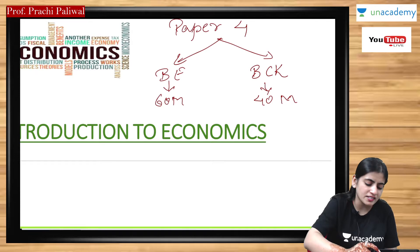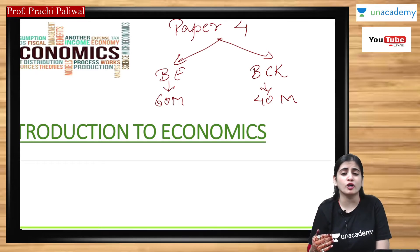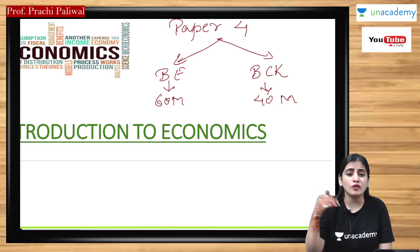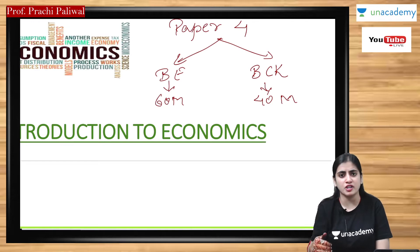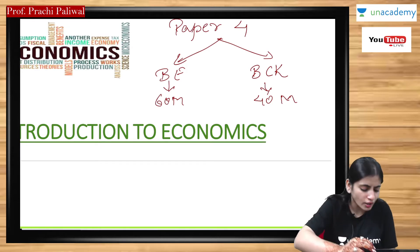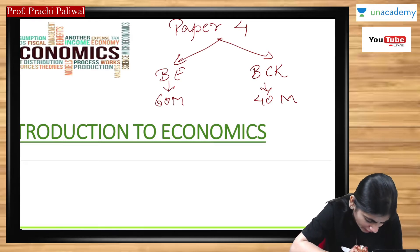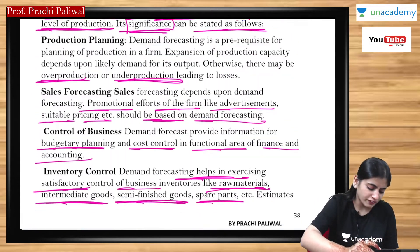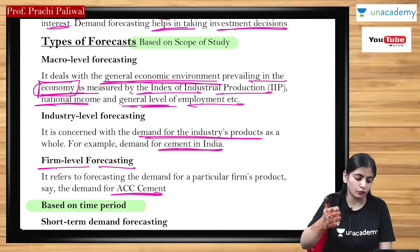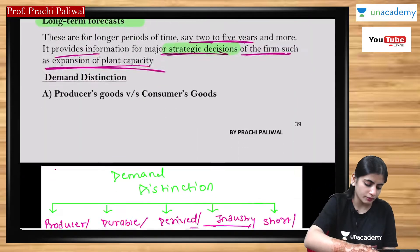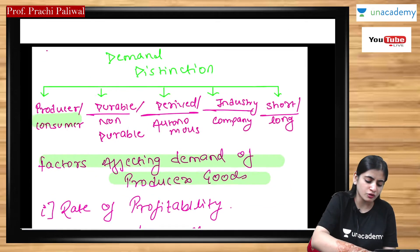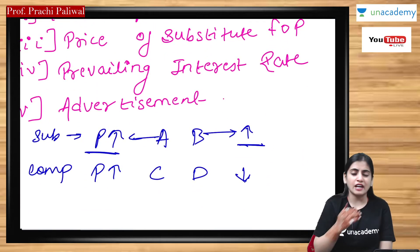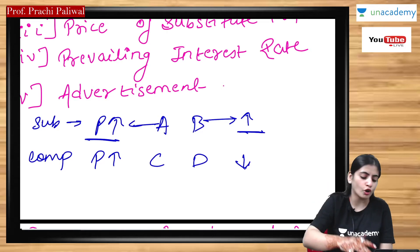We have started with demand forecasting. We studied the meaning of demand forecasting — when we forecast the demand for the future, estimate future demand, and predict future demand. We also covered where demand forecasting is useful, types of forecasting at macro, industry, and firm levels, and short-term and long-term types. We also covered demand distinctions: producer goods, consumer durable goods, non-durable goods, derived and autonomous goods, industry and company goods.